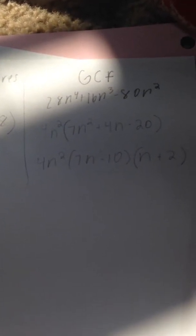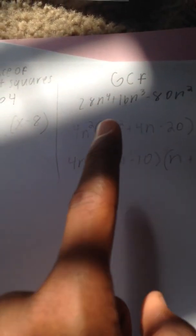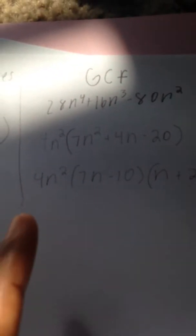Here's my greatest common factor. Looking at the equation, I notice that I can factor out a 4 from the numerical coefficients. When I look at my n values, I see n to the 4th, n to the 3rd, and n to the 2nd. I can factor out n squared because that is my lowest common term.